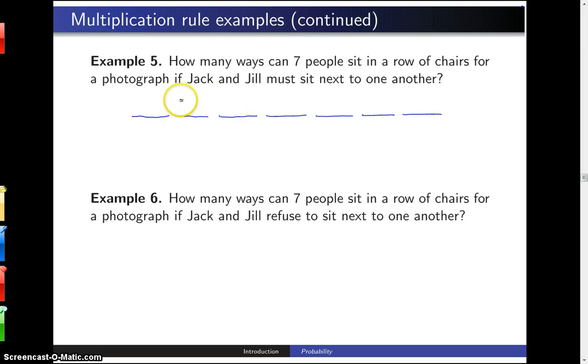So for example, we could put Jack right here and we want Jill to be next to Jack so let's put Jill right here and then we have five other people who don't have names so we'll just call them Abe, Bill, Chuck, Debbie, and Evelyn.